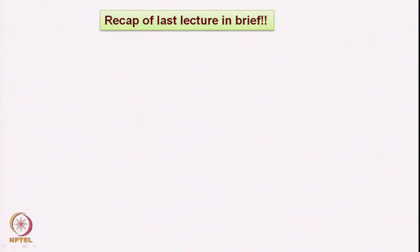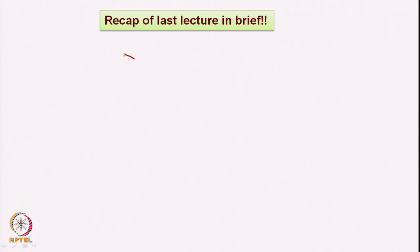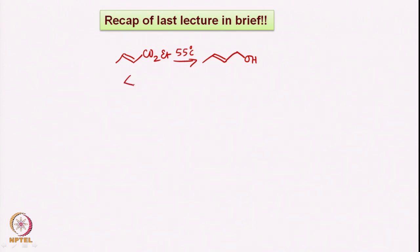We will briefly look at what we did in the last lecture, where we started with the reduction of the alpha-beta unsaturated ester with lithium aluminum hydride, where the corresponding alcohol was formed as CH2OH. We also looked at conditions where heating was required, approximately 55 degrees. Lactones give the corresponding diol, and we compared this with DIBAL reductions.